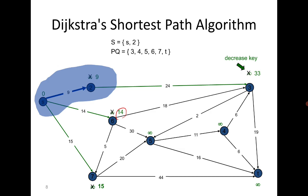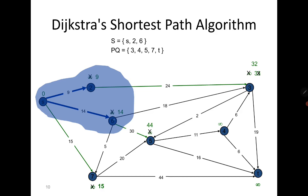Once we reach vertex 6, two more vertices become reachable and we update their distances. The earlier distance of 33 gets updated to 32 (14 plus 18), since we always update when we find a smaller distance. The other vertex gets distance 44. Among 32, 44, and 15, the minimum is 15.